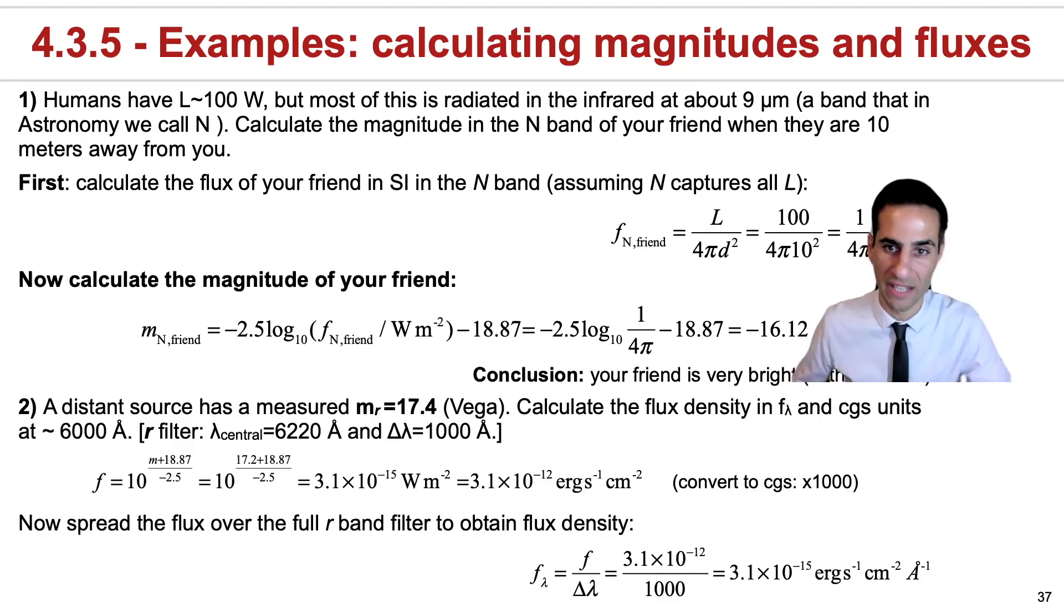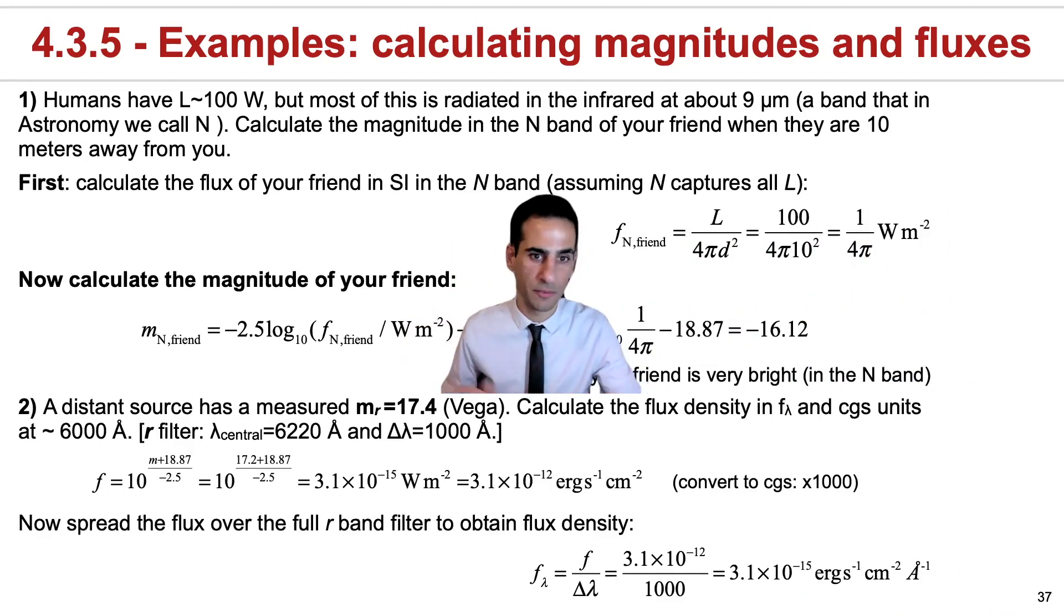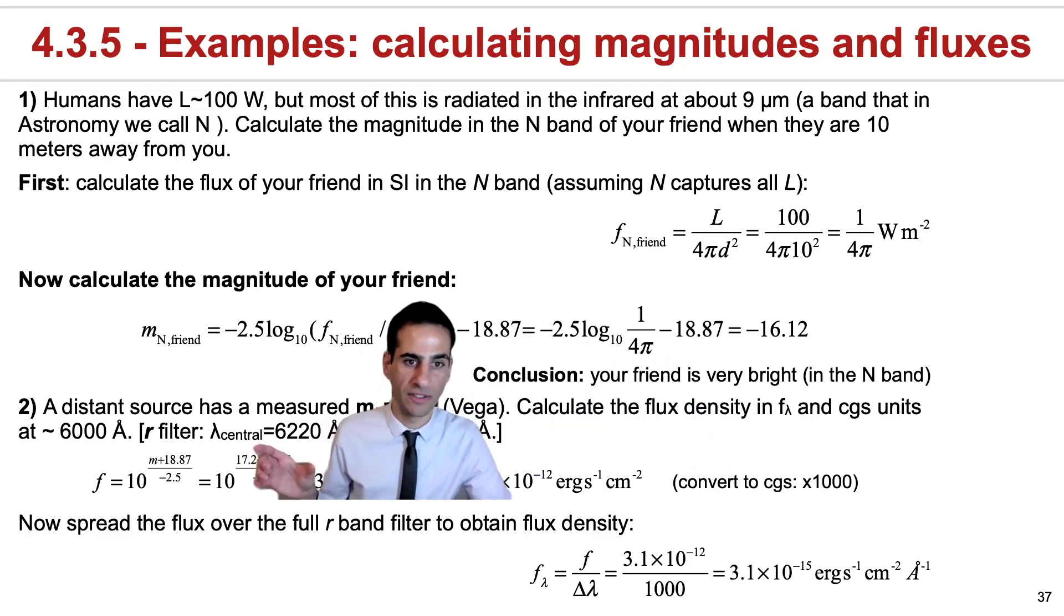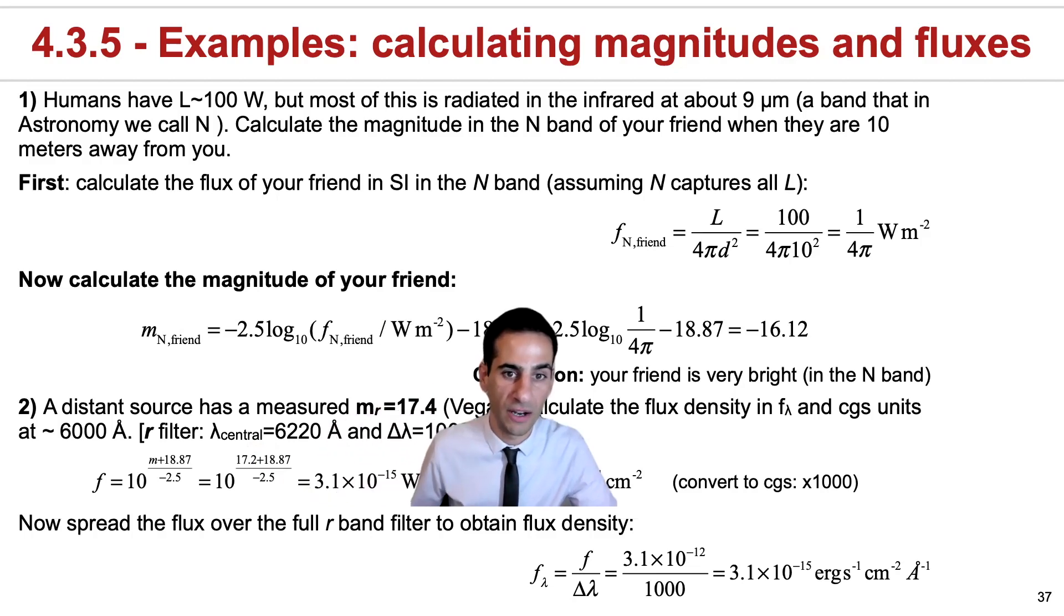Now, for a more astronomical example, let's say that we've measured through some processes the magnitude of a source in the R band, and that magnitude is 17.4. If we want to calculate the flux density in F_λ and CGS units at 6000 Angstroms, what do we need to do? And for this, typically these problems will tell you what you might need to assume in terms of the width of the band and what is a central wavelength, in this case of the R band filter.